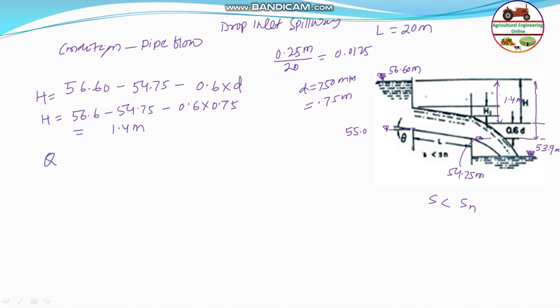The discharge through the inlet spillway is Q = area of the pipe × velocity. The velocity in the pipe is calculated from the equation: V = square root of (2gH) divided by (1 + K_e + K_c × l), where K_e is the entrance loss coefficient and K_c is the friction loss coefficient.